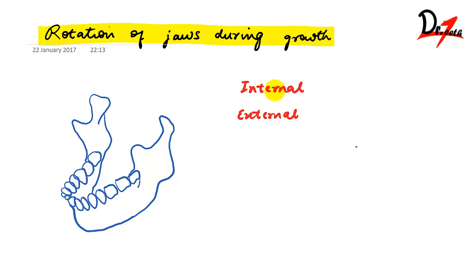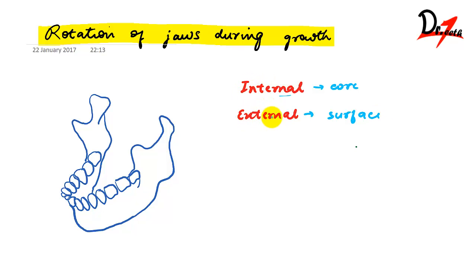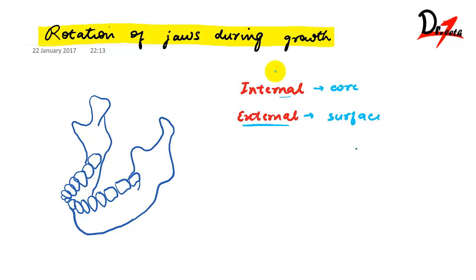Internal rotation, as the name suggests, is related to changes occurring inside — within the core of the bone. External rotation is produced by changes that occur on the surface. The internal rotation that occurs is not visible because it is masked by the external rotation. So though the internal rotation is occurring, we are not able to visually appreciate it.